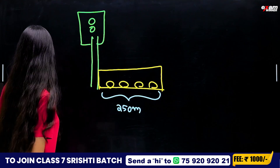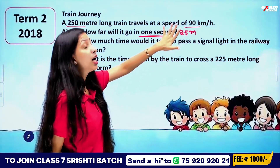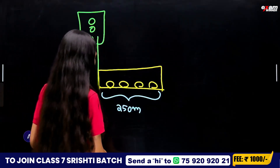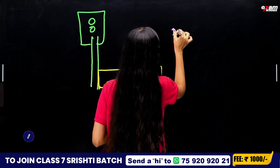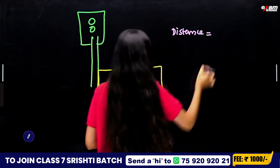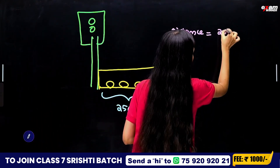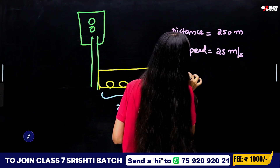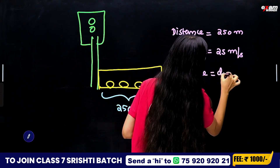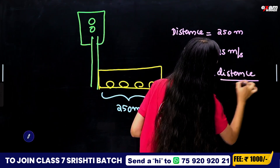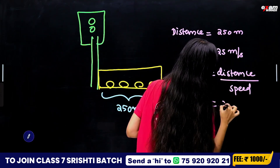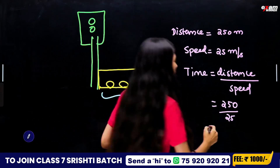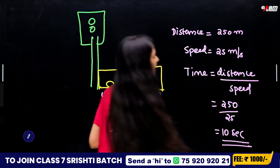We already have the speed: 25 meter per second. We have the distance, which is the length of the train — 250 meter. Time equals distance by speed: 250 by 25 gives 10 seconds.